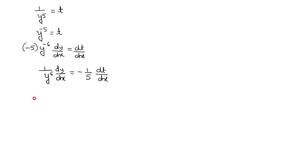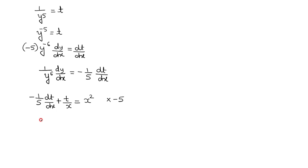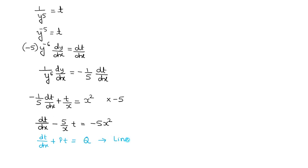We substitute this in the differential equation. It becomes: minus (1/5) dt/dx, and since 1/y^5 has been taken as t, it gives minus (1/5) dt/dx plus t/x equals x squared. Since the coefficient of the derivative should be equal to 1, we multiply throughout by minus 5. So: dt/dx minus (5/x)·t equals minus 5x squared. This equation is of the form dt/dx plus P·t equal to Q, which is a linear differential equation.